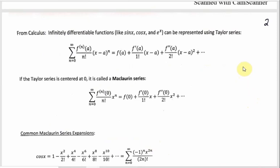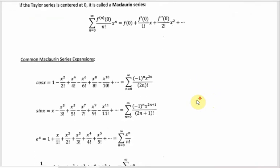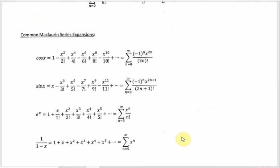This next page is more Calc 2 review. If you have a function where you keep taking derivatives and never get zero — like e to the x, sine x, or cosine x — those are going to be the most common things represented using a Taylor series. More specifically, if the Taylor series is centered at zero, that's a Maclaurin series. A Maclaurin series is just a special case of the Taylor series, and this is really what you use for the rest of this section and the next.